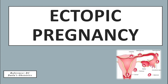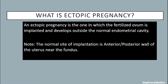Hello and welcome. Let's talk about ectopic pregnancy. An ectopic pregnancy is one in which the fertilized ovum is implanted and develops outside the normal uterine cavity. The normal site of implantation is the anterior or posterior wall of the uterus near the fundus.